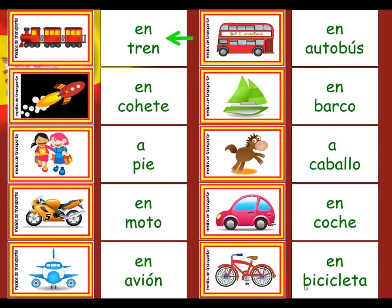So, en tren — if you go somewhere with this form of transport, you would say 'by train'. So en tren means by train. En cohete is by rocket — a very common form of transport, I'm sure you'll agree! A pie is a little bit different in English — it's 'on foot'. If you travel a pie, you travel on foot.